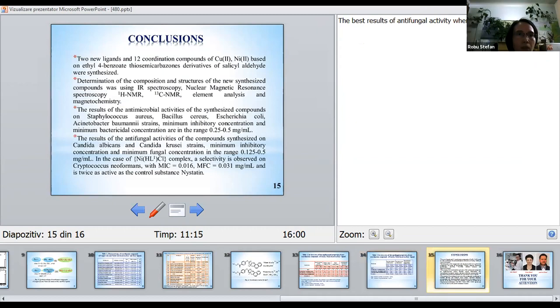Conclusions: Two new ligands and 12 coordination compounds of copper-2 and nickel-2 based on ethyl-4-benzoate thiosemicarbazone derivatives of salicyl aldehyde were synthesized. Determination of the composition and structure of new synthesized compounds was done using IR spectroscopy, NMR spectroscopy, elemental analysis, and magnetochemistry.